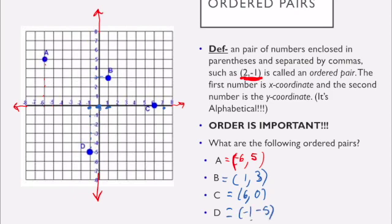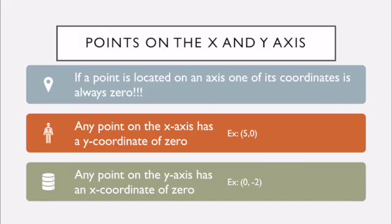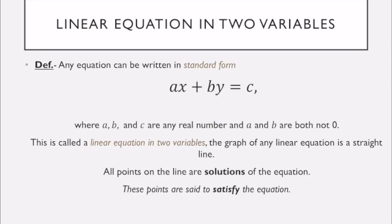So, here's how we find ordered pairs. A quick tip, a good way to remember which coordinate goes first, either the x-coordinate or y-coordinate, is it's alphabetical, because x comes before y in the alphabet. So, important to note, if a point is on the x-axis or the y-axis, one of its coordinates is always going to be 0. Any point on the x-axis is going to have a y-coordinate of 0, and any point on the y-axis is going to have an x-coordinate of 0.